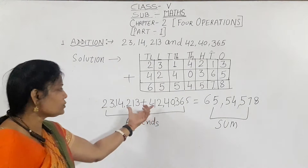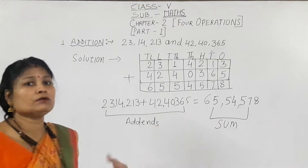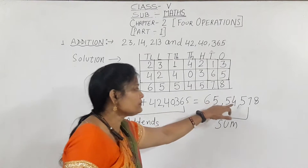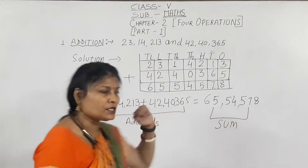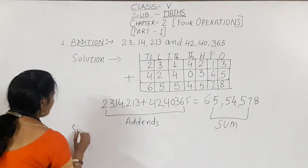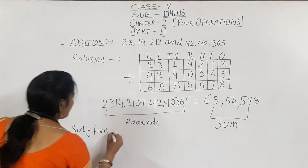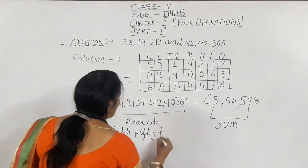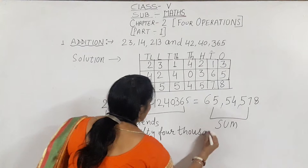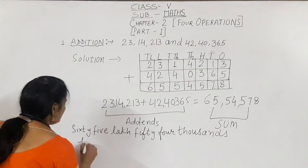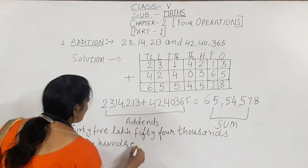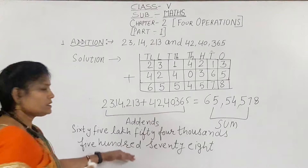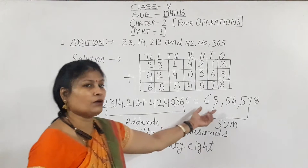Our sum is 65,054,578. This is my sum, this is my answer, this is my solution. We can also write it in words — the number name. 65,054,578 written in words according to our place value. This is the number name according to our place value.